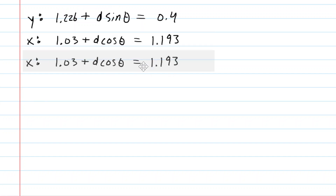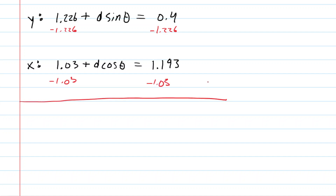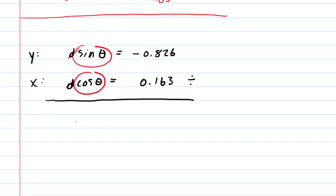There are a couple ways to solve this, but one algebraic trick is to subtract 1.226 from both sides of one equation and 1.03 from both sides of the other, generating two new equations. If we then divide these two equations, the d's cancel — d divided by d is just 1. Then sine of theta divided by cosine of theta equals tangent of theta, by trig identity. Dividing negative 0.826 by 0.163 gives about negative 5.067, so tan(θ) ≈ −5.067.